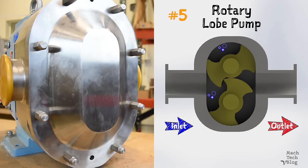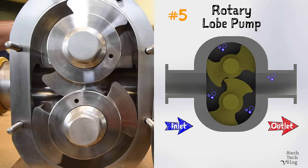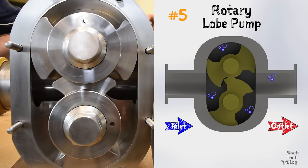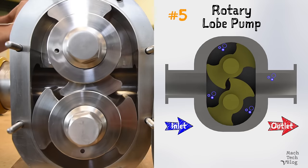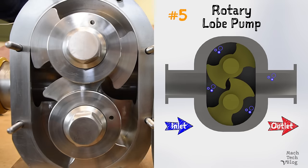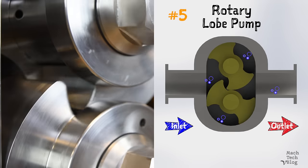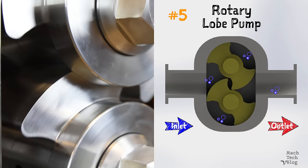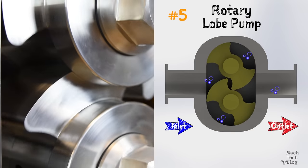Pump number five is the lobe pump. Lobe pumps function very similarly to external gear pumps, but the rotors are driven independently by external timing gears. The rotors have two or more lobes, and the moving chamber is formed between the outer surfaces of the lobes and the inside wall of the oval housing. As one of the lobes rotates back toward the center of the housing, the tight clearance between the lobe and the other rotor closes the chamber and forces the fluid through the discharge outlet.